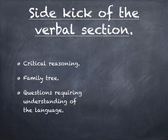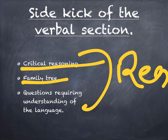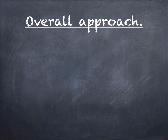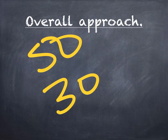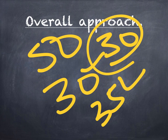The verbal section has a sidekick benefit too. Critical reasoning and family tree questions that require understanding of language appear in the reasoning or miscellaneous reasoning section. If you're confused by word or sentence formation, you won't be able to solve those questions either. To summarize: in the verbal section, out of 50 questions your target should be a minimum of 30 attempts — ideally 35 attempts in 30 minutes. 23 questions are very easy, 19 are medium, and 8 are difficult. CETking will help you achieve this target.